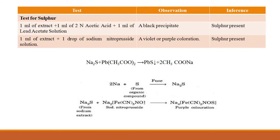Test for sulfur: take 1 ml of sodium fusion extract, add 1 ml of 2N acetic acid plus 1 ml of lead acetate solution. A black precipitate confirms sulfur is present — lead acetate reacts with sodium sulfide to form lead sulfide, which is black. Another test: sodium fusion extract plus 1 ml of nitric acid and one drop of freshly prepared sodium nitroprusside — violet, purple, or deep red color also confirms sulfur is present.